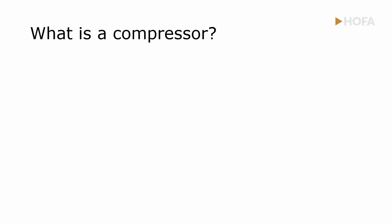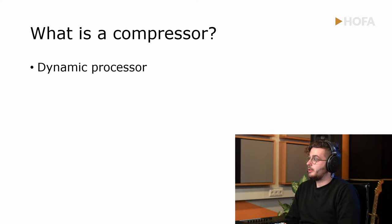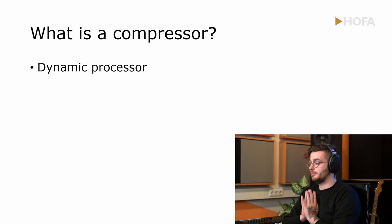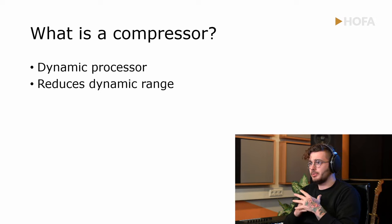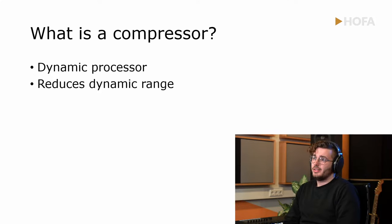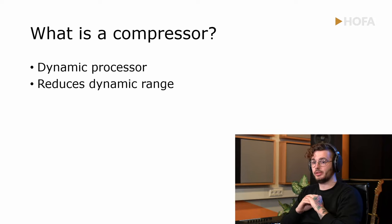Now, what is a compressor and what does it do? It's a dynamic processor — we're talking about dynamics and we need to process them. What a compressor does is reduce the dynamic range of a signal. There's a misconception that a compressor makes signals louder, but actually the only thing a compressor does is make the signal quieter — it reduces the difference between the loudest peak and the quietest point. That's what a compressor does, basically.